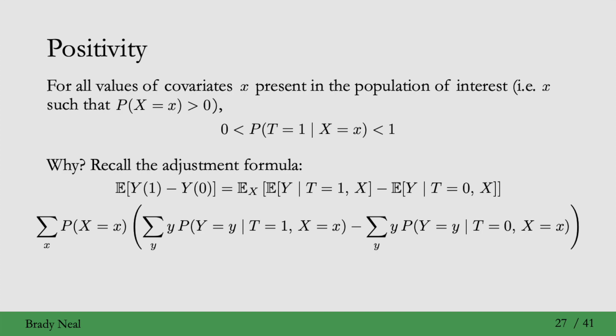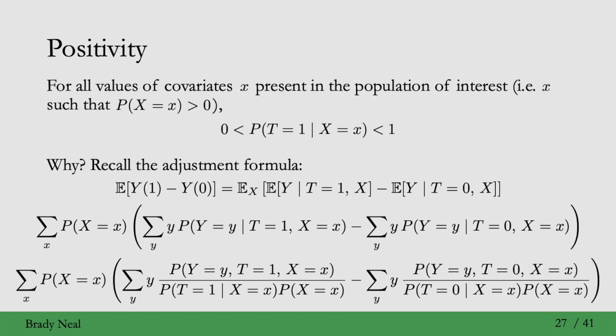Then we can rewrite the adjustment formula with summations as follows. And if x and y were continuous, you would just use an integral here. Now we can rewrite this using Bayes' rule to make things a little bit more clear. Importantly, now we have in the denominator something that looks very relevant for the positivity assumption.